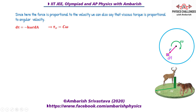Since the force is proportional to velocity, the viscous torque is also proportional to the angular velocity. So d-tau equals minus k times omega r dA. Because omega r is the velocity, and multiplying by another r gives minus k omega r squared dA. So we can say that the viscous torque is proportional to omega — that is, proportional to the instantaneous angular velocity. This is the important fact I am going to use.